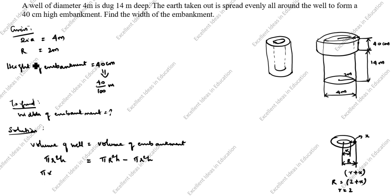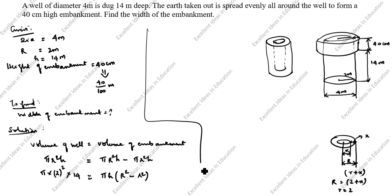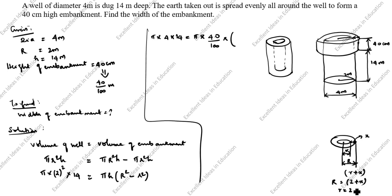Volume of well equals pi into r squared into h. r is 2 meter, height of well is 14 meter. Volume of embankment equals pi times big R squared times h minus pi times small r squared times h, with pi h taken as common outside, leaving big R squared minus small r squared. Height of embankment is 40 centimeter, converted to 40 by 100 meter. So we write: pi times 2 squared times 14 equals pi times 0.4 times (2 plus x) squared minus 2 squared.